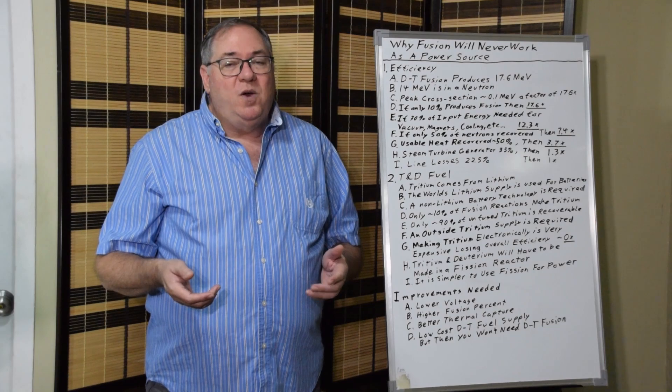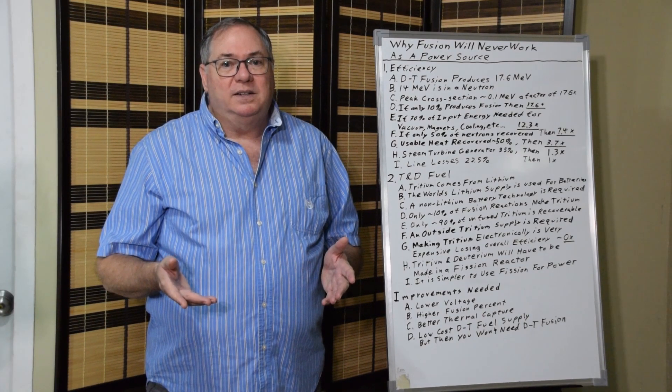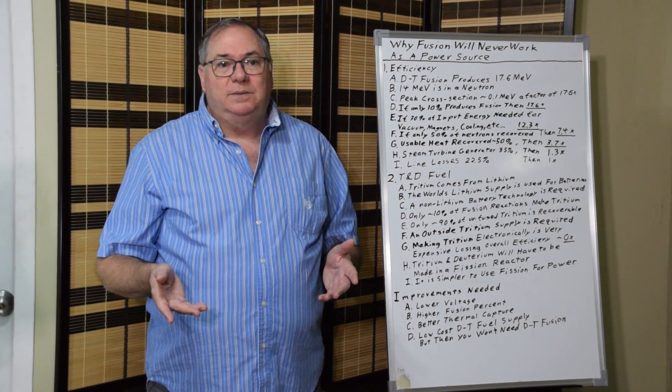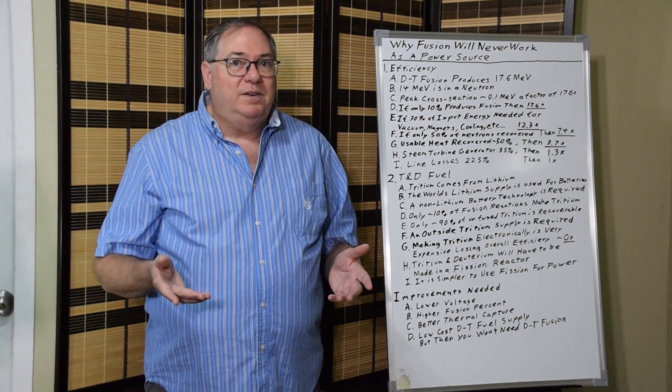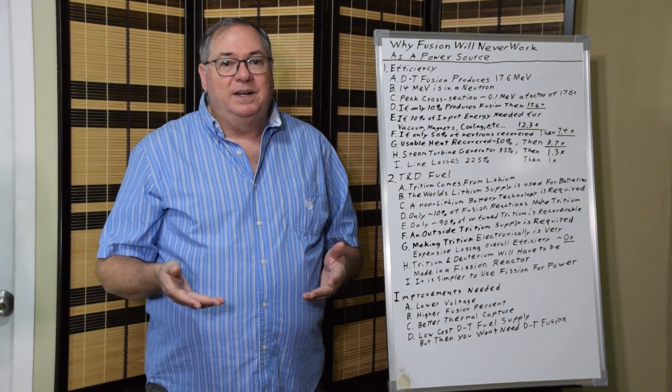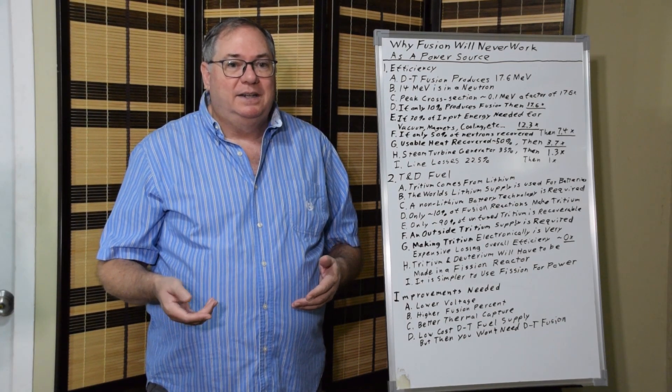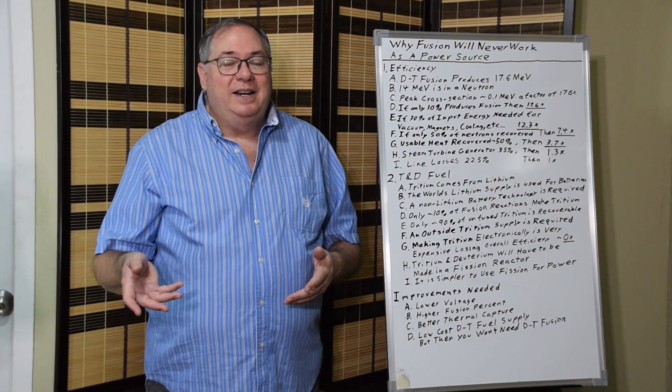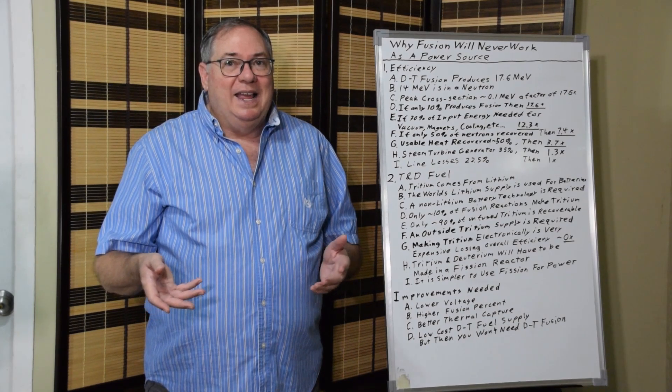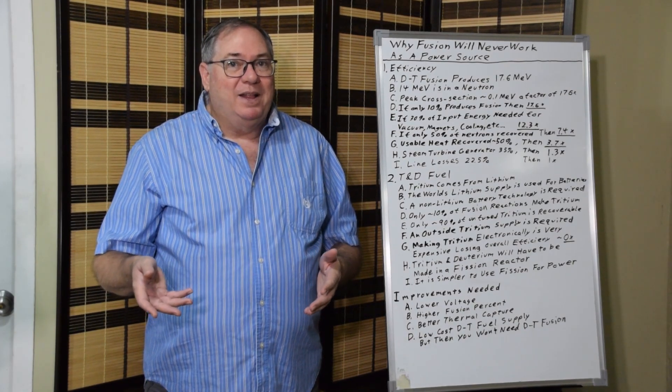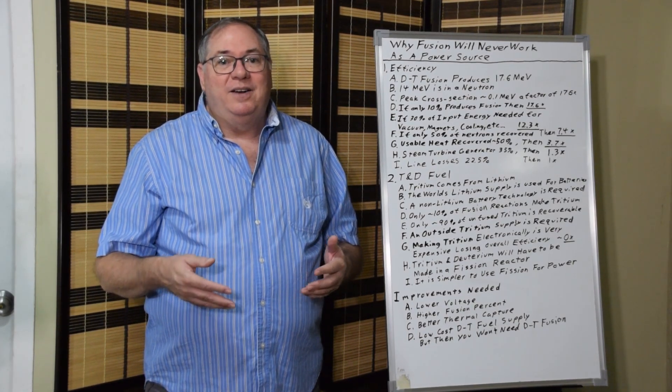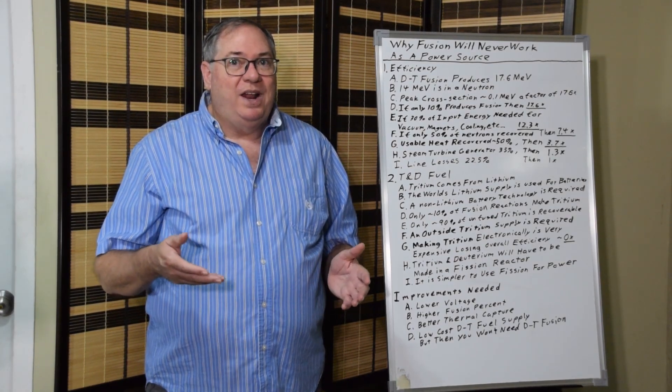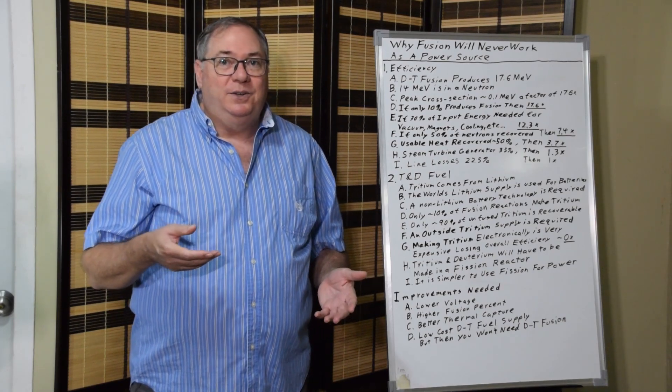If you only recover half the energy in the neutrons, then that drops you down to 7.4. And then if you only recover 50% of the heat, that brings you down to 3.7. And then if you're running a gas turbine generator system, they're only about 35% efficient, so now you're down to 1.3. And then you're looking at line losses, 22.5%, and now you're down to 1.